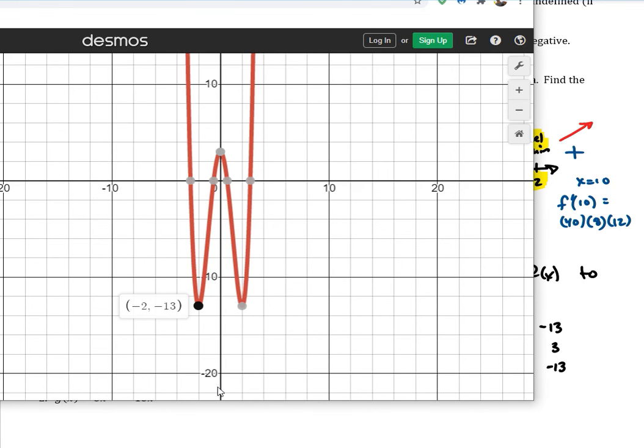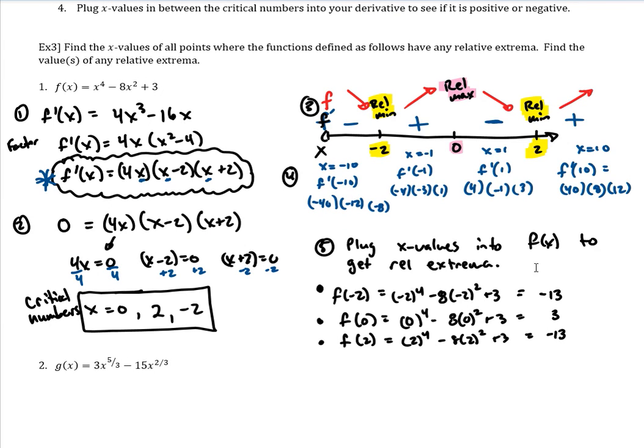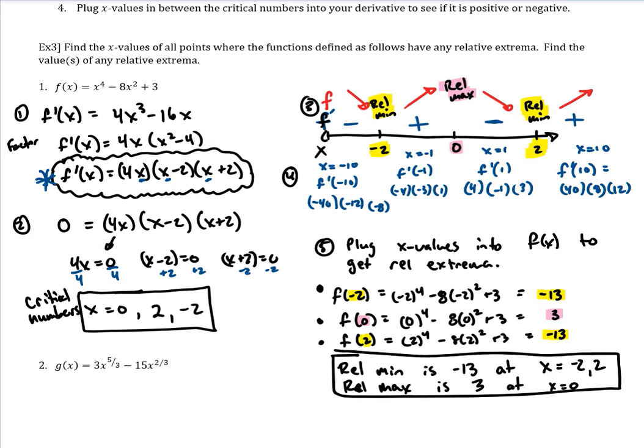This shows us, this shows there is the minimum. The relative minimum is negative 13. We have another relative minimum of the same value of negative 13. And then we have a relative max of three. That's why we wanted to evaluate those. So we knew the relative min occurred at negative two and it occurred at positive two. And so now we could formally answer it. So the relative minimum is negative 13 at x equals negative two and positive two. And then the relative max is this y value three at x equals zero.